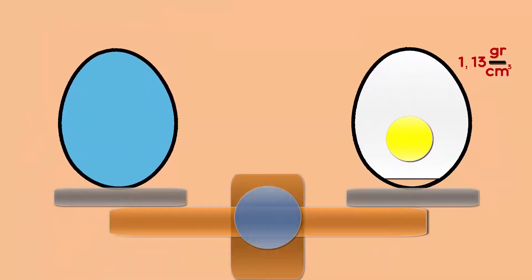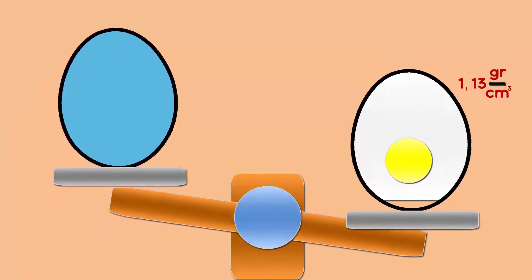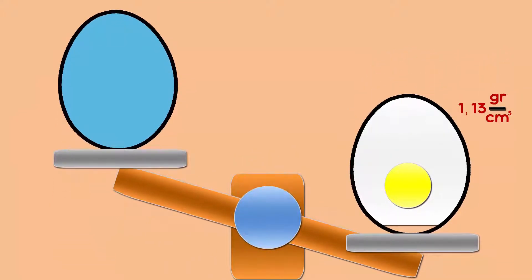Of course it's intuitive that it's the egg, and this is because the density of our tap or fresh water is 1 gram per cubic centimeter.